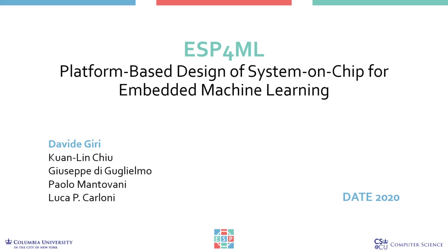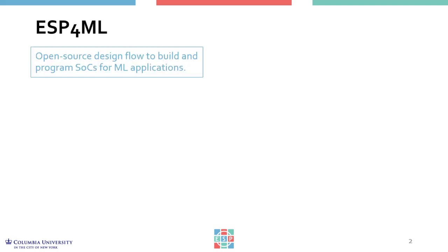The challenges of integrating many different accelerators into an SOC at design time and managing the shared resources of the SOC at runtime have become much harder. We present ESP4ML, an open-source system-level design flow to build and program SOC architectures for machine learning embedded applications that require hardware acceleration.